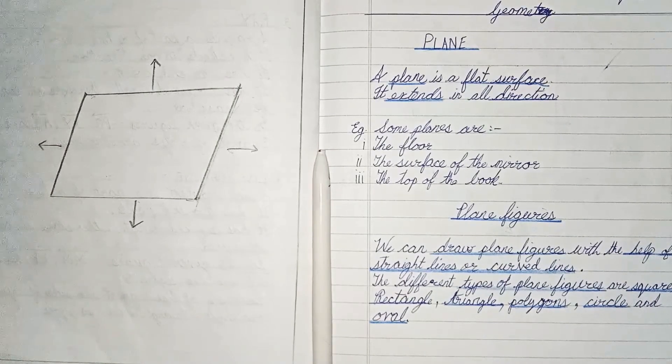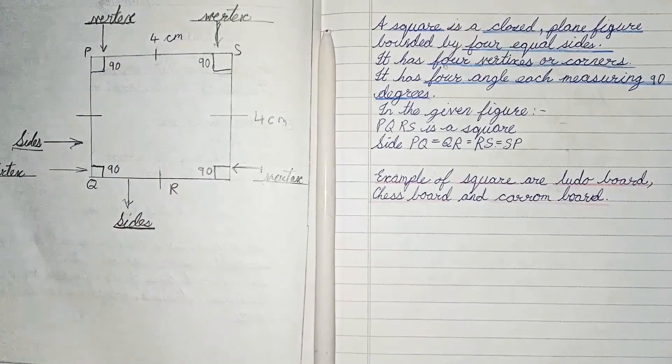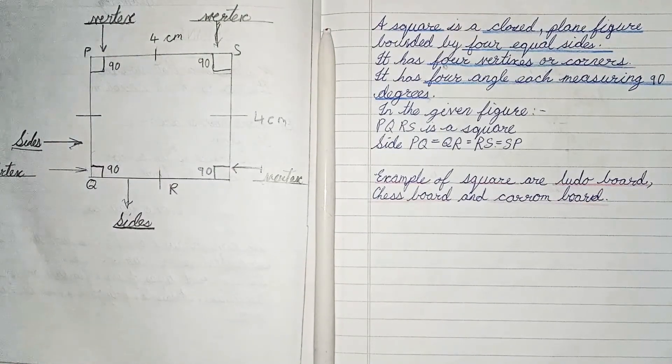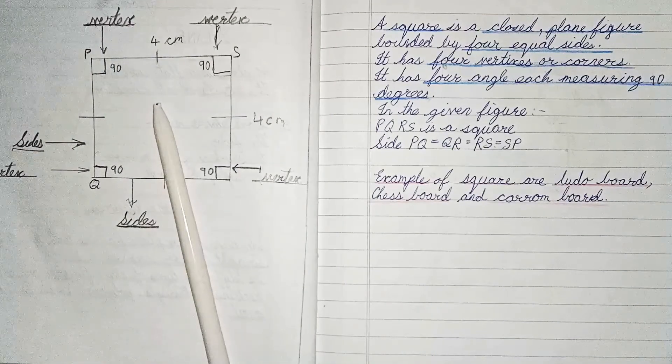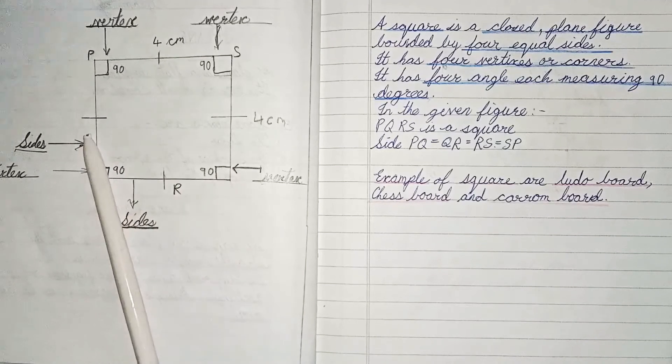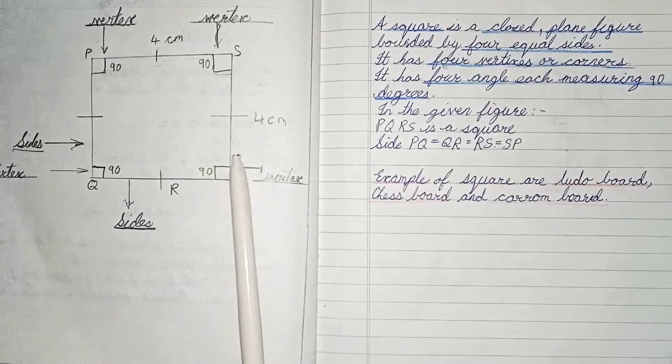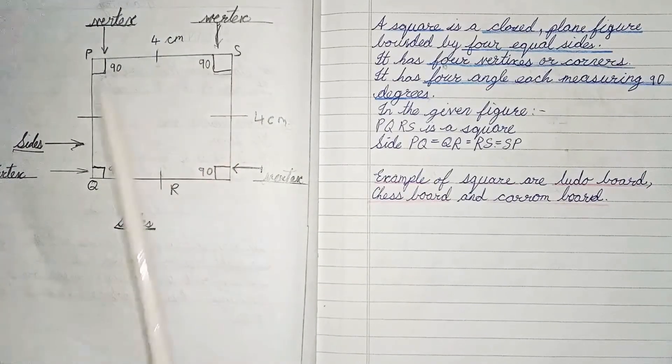Now we will quickly revise some plane figures. First of all, we will see about square. A square is a closed plane figure bounded by four equal sides. It has four vertices or corners and it has four angles, each measuring 90 degrees.